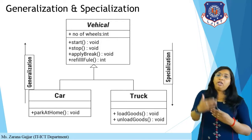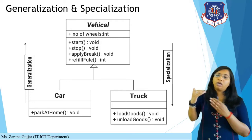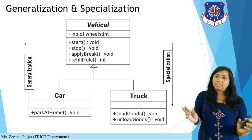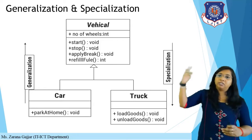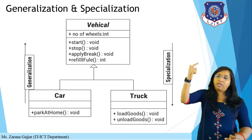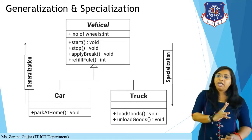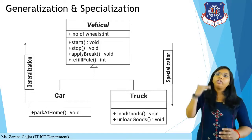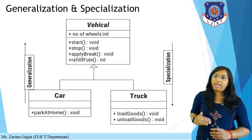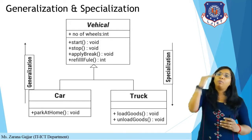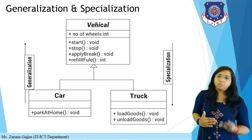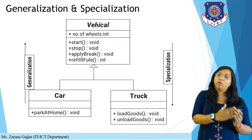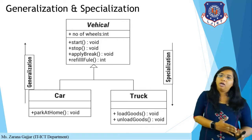Here we are generalizing the vehicle class into car and truck. Car and truck are both classes that are generalized into the vehicle class. The arrow from car to vehicle represents generalization. If you read a class in a bottom-up approach it is generalization, and if you read top-down it is specialization.